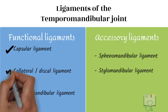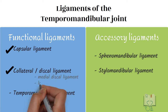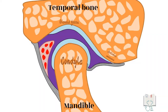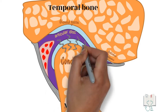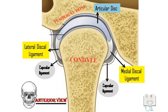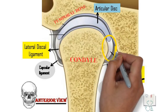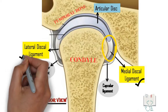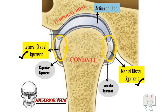The collateral ligament or discal ligament: there are two — the medial discal ligament and lateral discal ligament. These ligaments attach the articular disc to the condyle. When the joint is viewed anteriorly, the medial discal ligament attaches the disc to the medial pole of the condyle, and the lateral discal ligament attaches the disc to the lateral pole of the condyle.